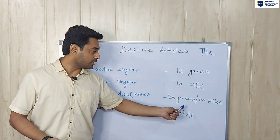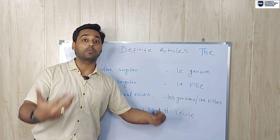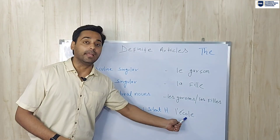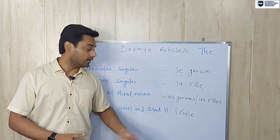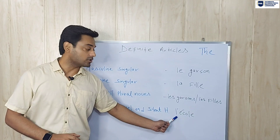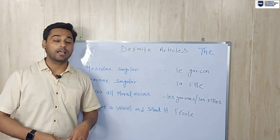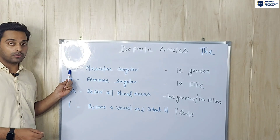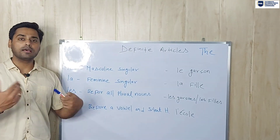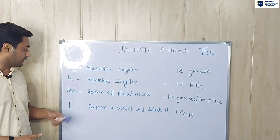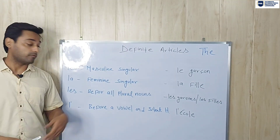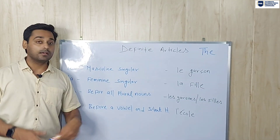We use l'apostrophe before a noun which begins with a vowel. For example, 'l'école' — that means 'the school'. This noun begins with a vowel — 'e' here is a vowel — that's why we use l'apostrophe: 'l'école', the school. To summarize: 'le' before masculine singular nouns, 'la' before feminine singular nouns, 'les' before all plural nouns, and l'apostrophe before a vowel and silent h.